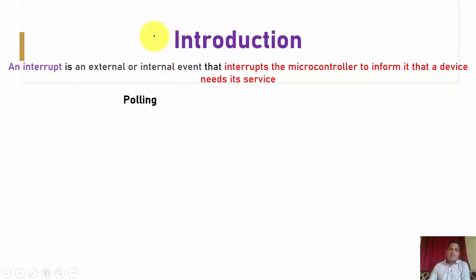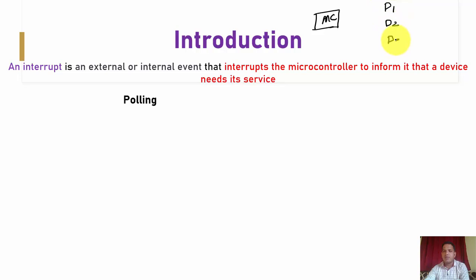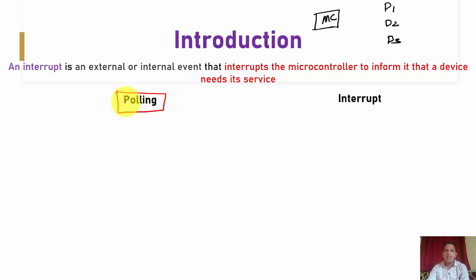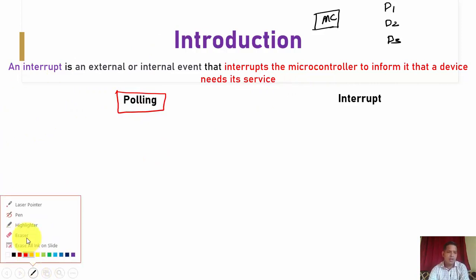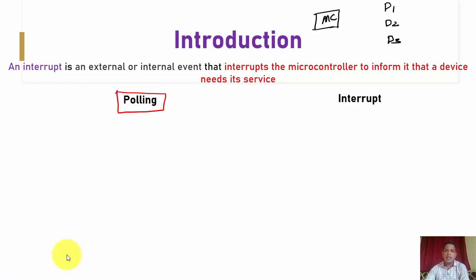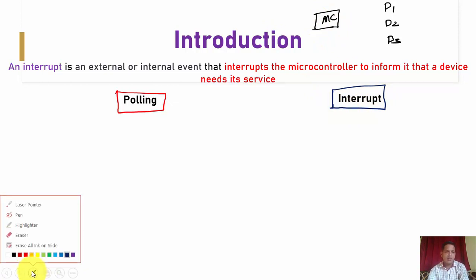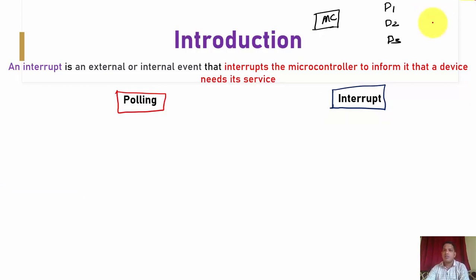Now consider a microcontroller connected to three devices: device 1, device 2, and device 3. There are two ways the microcontroller can communicate with these devices. The first technique is called polling, and the second is the interrupt technique. Let us find out the difference between these two approaches.